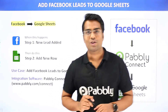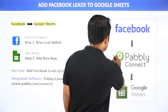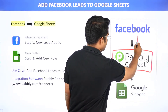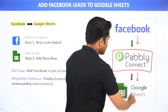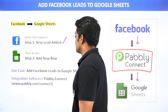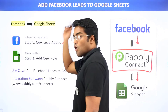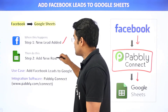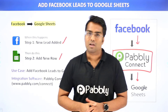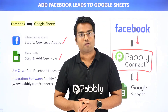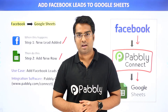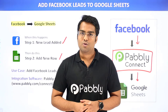In this video we will be using PabliConnect to integrate Facebook and Google Sheet. What PabliConnect will do is, anytime a new lead is added in Facebook, it will automatically send or insert this data to Google Sheet. This little integration can be done very easily, and the best part of using PabliConnect is there is no need for coding skills or programming language. So let me show you on my screen.